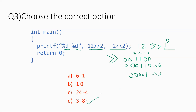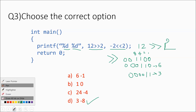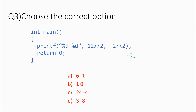Now for -2 << 2: << is the left shift operator, which is the reverse of right shift. Right shift divides by 2, so left shift multiplies by 2. We are doing left shift 2 times, so -2 multiplied by 2 gives -4, and -4 multiplied by 2 gives -8.